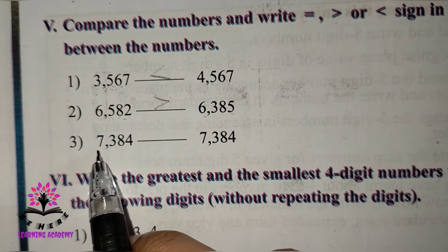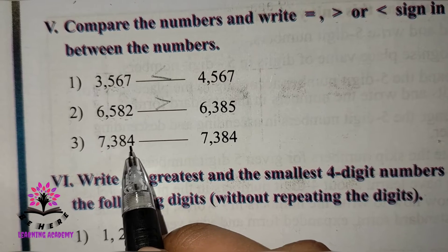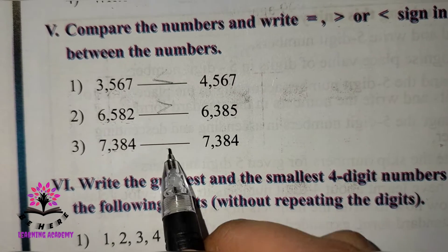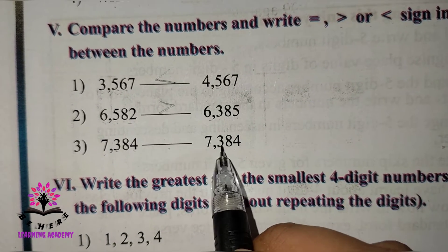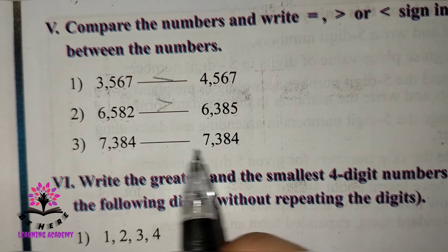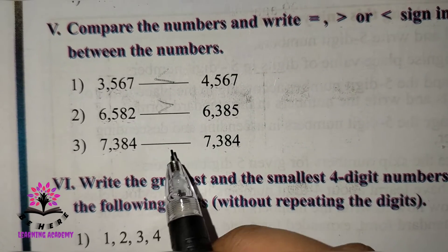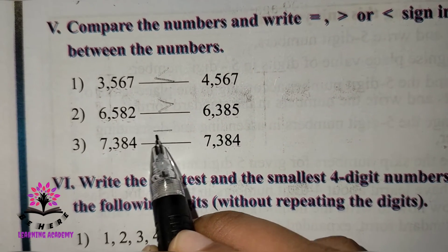Last comparison: 7384 versus 7384. If you observe both numbers, they are the same. So we write the equal to sign between them.